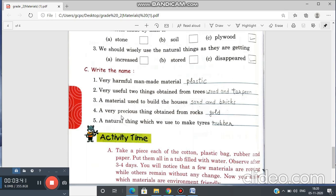Number four is a very precious thing obtained from rocks. Yes. Name the thing. This is gold.